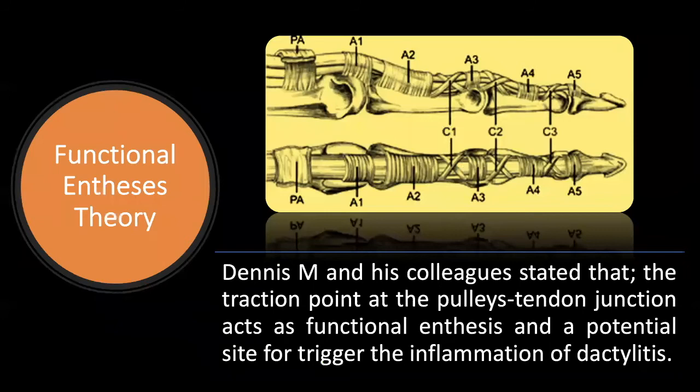Tendon pulleys of the flexor tendon are responsible for fixing the flexor tendon in place during dynamic motion. This led to the 'functional enthesitis theory,' described by Dennis McGonagle and colleagues, which proposes that the traction point between the pulley and tendon junction acts as a functional enthesis — a potential site for triggering the inflammation of dactylitis. The friction at the pulley–flexor tendon interface is theorized to be the initiating point of inflammation in the dactylitic finger.